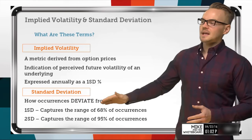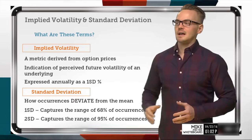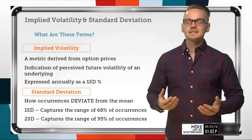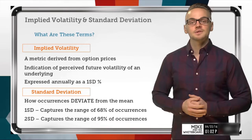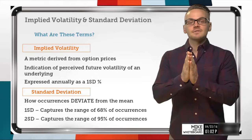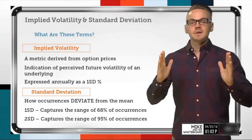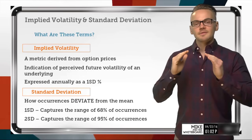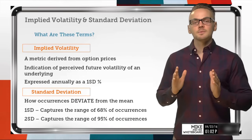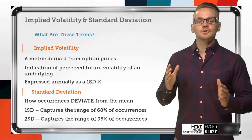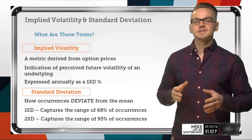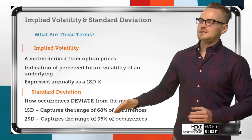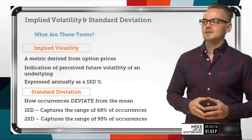When we're looking at a one standard deviation level, we're capturing the range of 68% of those occurrences — one standard deviation on the upside and the downside of that bell curve. We're really just looking at what levels would capture 68% of those occurrences. Two standard deviations would capture the range of 95% of those occurrences.